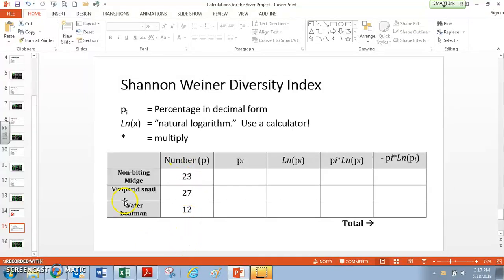So here's our numbers of some organisms. Now, these are made-up numbers. These aren't from a certain year or anything. We are going to pretend that we found 23 non-biting midges, 27 viviparite snails, and then 12 water boatmen. Now, which species they are doesn't really matter, as long as you recognize each one's a different species, and here's the numbers for them.